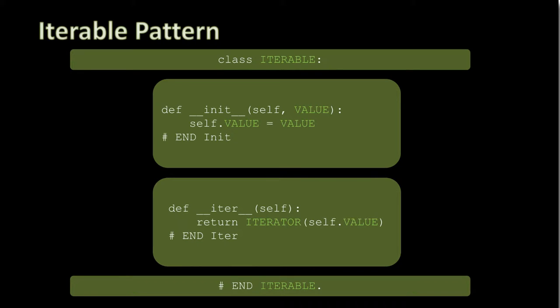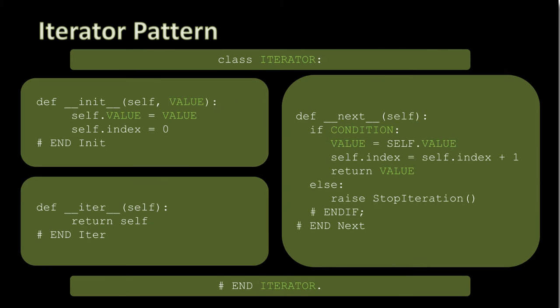It has an __init__ method which sets a particular value to the value in that object, and it has an __iter__ method. The __iter__ method returns the iteration of the particular value we're on. To call that, to return the iteration, means we need to have an iteration class as well. Let's look at the pattern for the iteration class or iterator class.